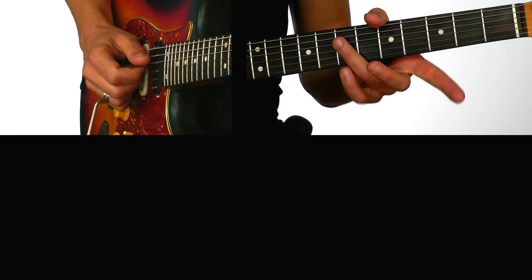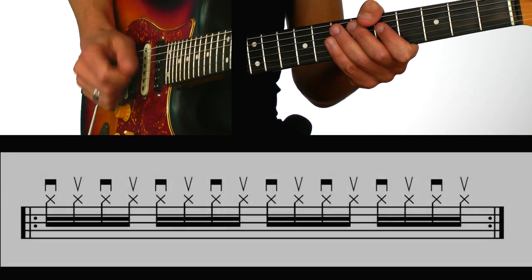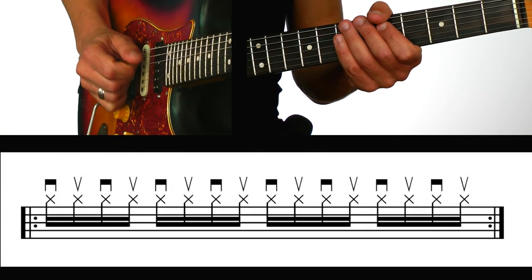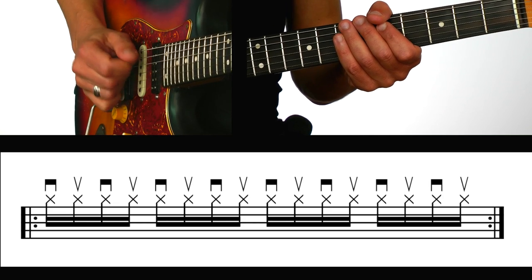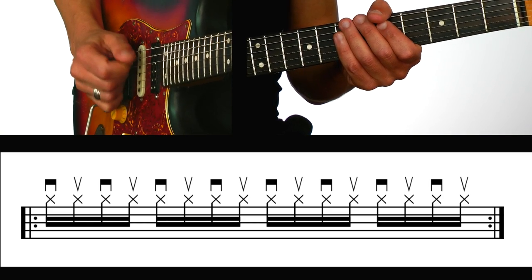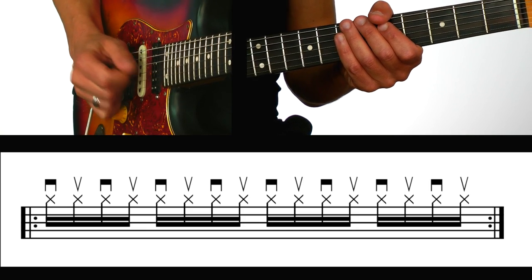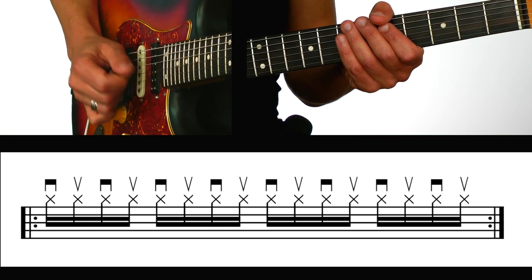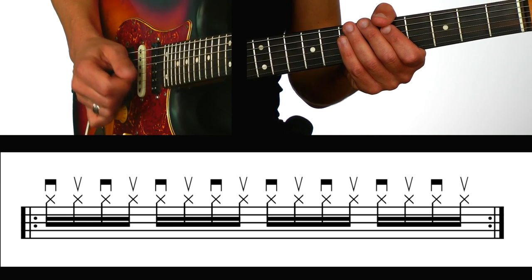Let's start on the 4th string, D, at 60 BPM. Play muted notes. Okay, when you feel comfortable, let's move on to the other strings: G, B, and E.